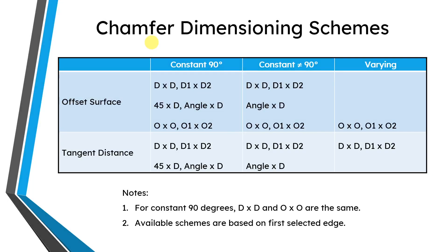In Creo Parametric, you have a variety of different dimensioning schemes for chamfers. I went through those in the first video in the series on chamfers. In this video, I'm going to go into more detail — honestly, into the weeds on this. This will be in more depth than probably 99% of all Creo Parametric users will ever need to go, but I want to make sure you are aware of the different combinations that you can use.